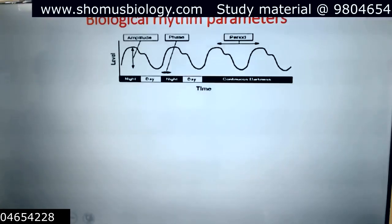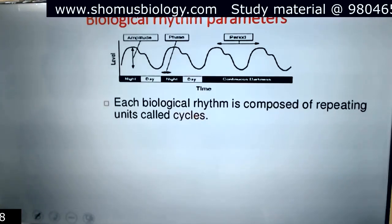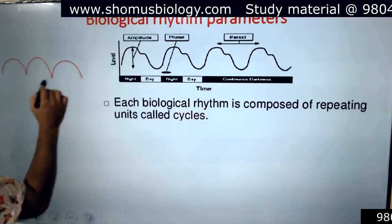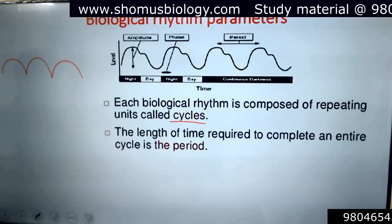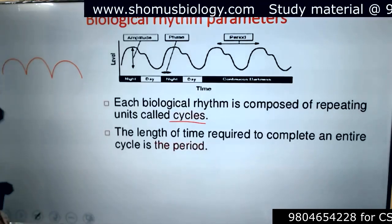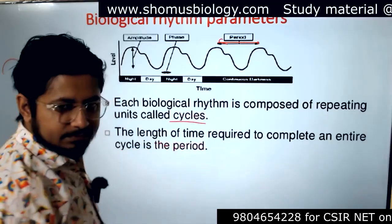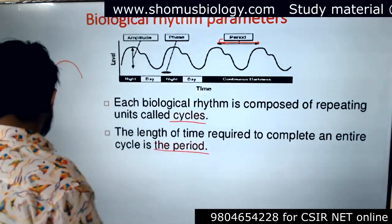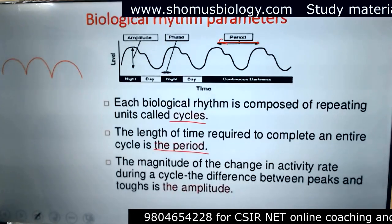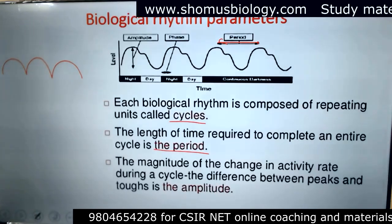This is the pattern and parameters of a rhythm. Each biological rhythm is composed of repeating units. These repeating units are known as cycles. The length of time required to complete an entire cycle is known as the period — the length to complete the cycle is the period.